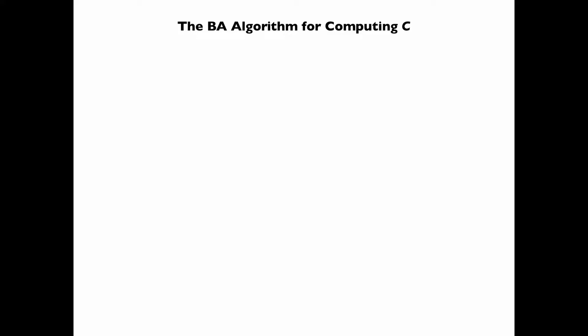We now describe the Blahut-Arimoto algorithm for computing the channel capacity C, which is obtained by specializing the general alternating optimization algorithm.